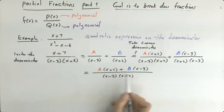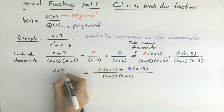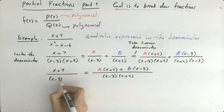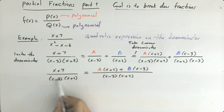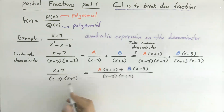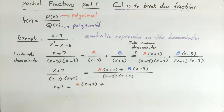Note that these fractions are equivalent: x plus 7 divided by x minus 3 times x plus 2 is the same as the new fraction with unknowns. Since the denominators are the same, we set the numerators equal to each other: x plus 7 must equal A times x plus 2 plus B times x minus 3.